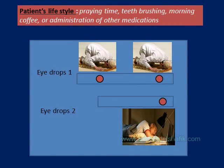When prescribing drugs, consider the lifestyle of the patient and make an association between the time of application and something they do every day. For example, if the patient prays twice a day, have them put the drug at each prayer time. Or if they watch the news every night at 9 or 10 o'clock, have them put the drops at that time. Make an association between their daily routine and the medication.